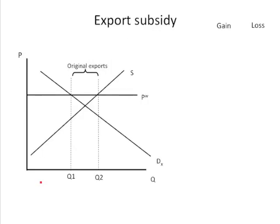We're going to start out with a small country example. We have an original world price — small country, so no matter what this country does, that's going to be the world price. We have an original level of exports, Q1 to Q2.